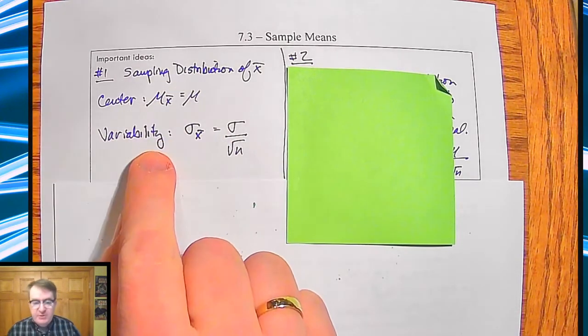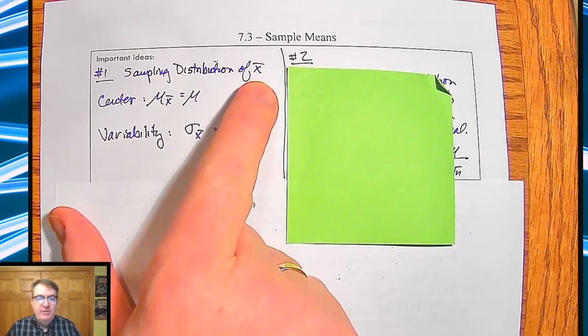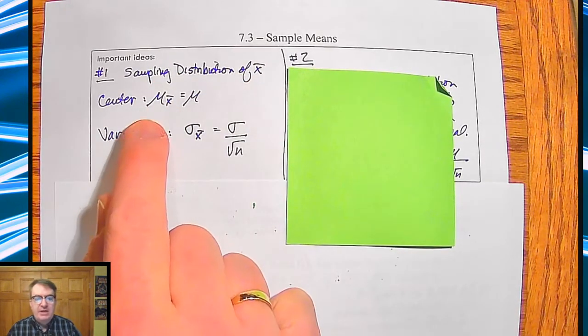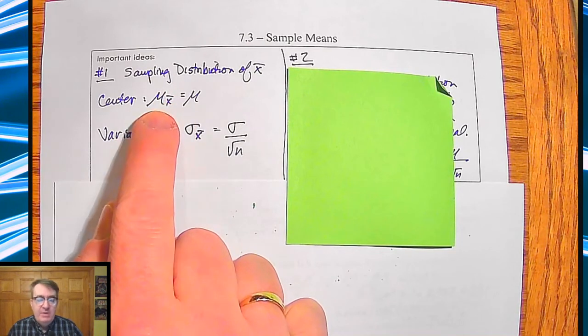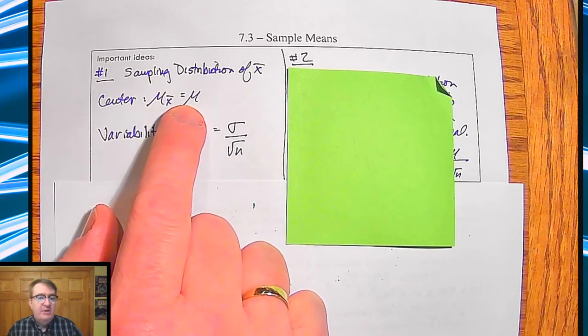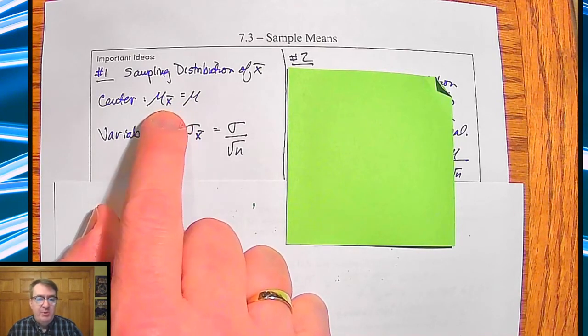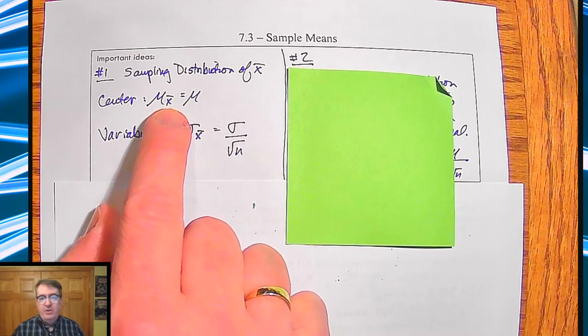So first things first, the first big idea is the sampling distribution of x bar. So what ends up happening is as we found out, the center stays the same. So this idea that the sample mean, the mean of the samples, is going to be the same as the mean of the population. That's going to be extremely helpful to know as we continue on.